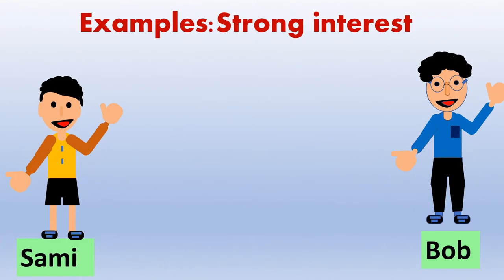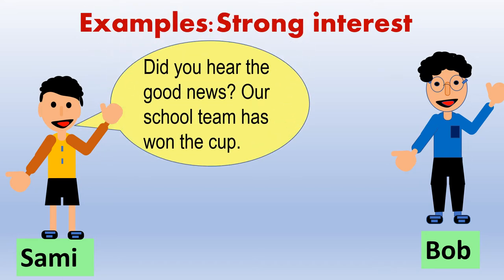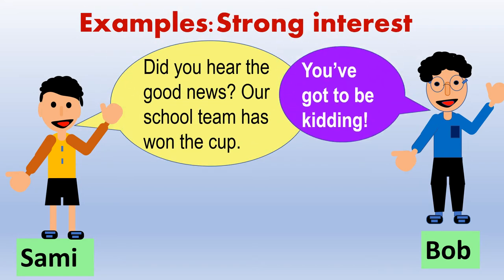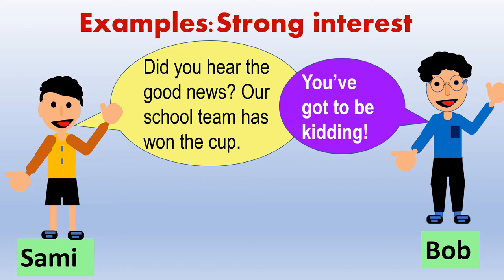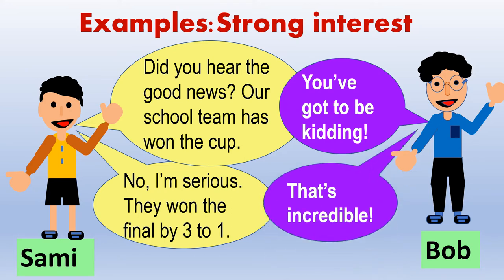Strong interest — Listen and practice. A: Did you hear the good news? Our school team has won the cup. B: You've got to be kidding! A: No, I'm serious. They won the final by 3-1. B: That's incredible!